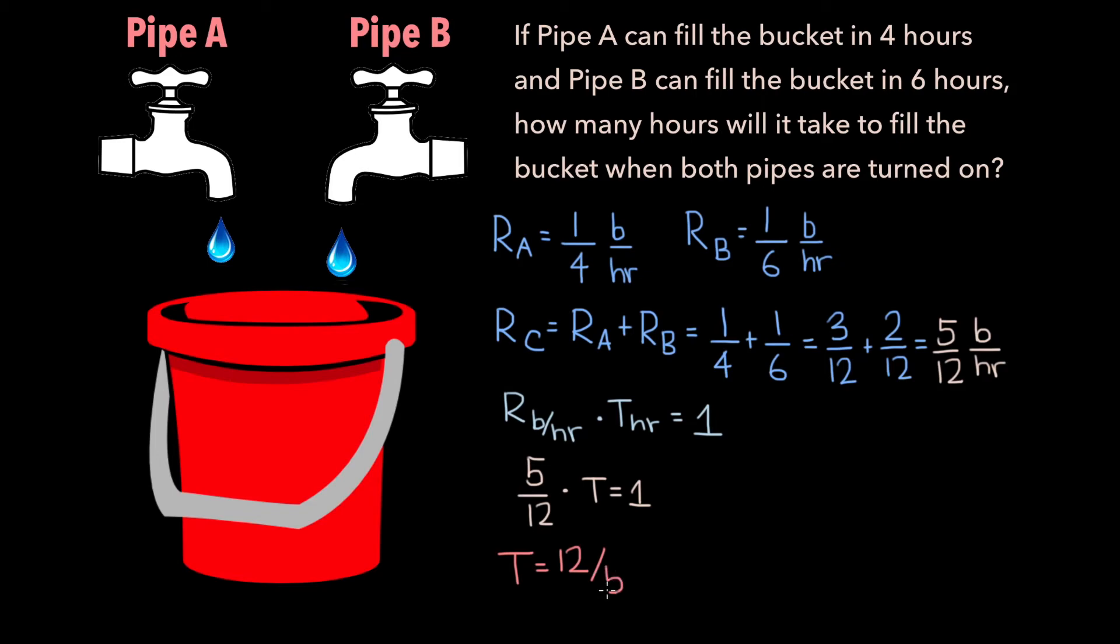If this method doesn't convince you, another way to think of this is if 5 buckets take 12 hours to fill, then 1 bucket should take 1 fifth of that time or 12 fifths hours.